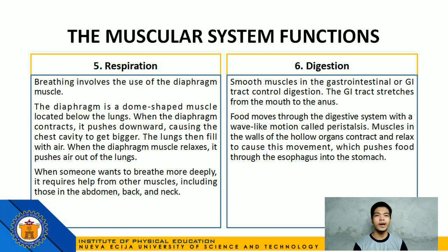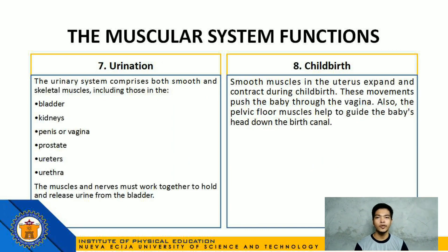Number 6: Digestion — smooth muscles in the gastrointestinal or GI tract control digestion. The GI tract stretches from the mouth to the anus. Food moves through the digestive system with a wave-like motion called peristalsis. Muscles of the hollow organs contract and relax to cause this movement, which pushes food through the esophagus into the stomach. The urinary system comprises both smooth and skeletal muscles, including those in the bladder, kidneys, penis or vagina, prostate, ureters, and urethra. The muscles and nerves must work together to hold and release urine from the bladder.